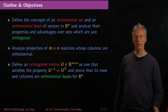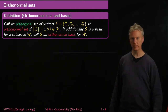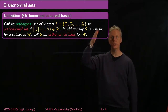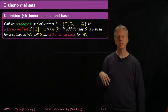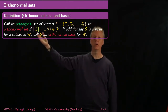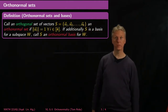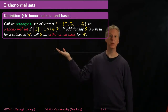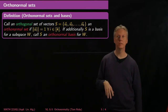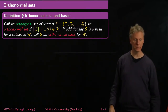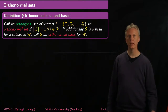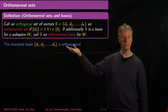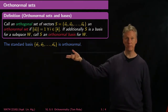Here's the definition. We'll call an orthogonal set of vectors u1 through uk an orthonormal set if, in addition to being orthogonal, they all have unit length. If in addition S is a basis for a subspace W of R^n, then we'll call S an orthonormal basis for W. A simple example is the standard basis, which is orthonormal because each vector has unit length.